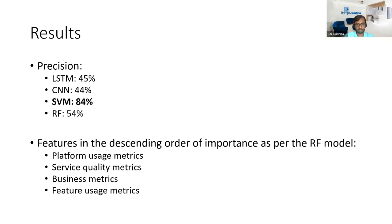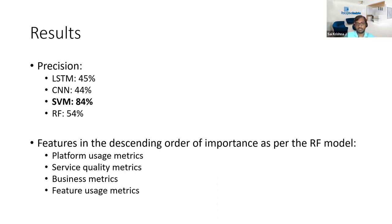The Random Forest model produces a feature importance plot. When applied to this dataset, the features in decreasing order of importance were: platform usage metrics (most important), followed by service quality metrics, then business metrics (how much money was spent on ads), and finally feature usage metrics. That concludes the overview of the paper.